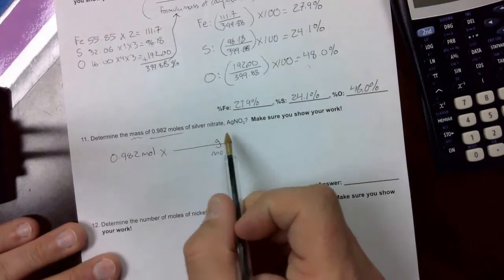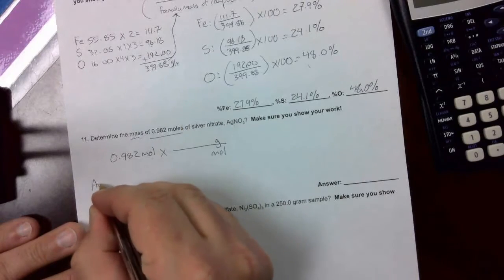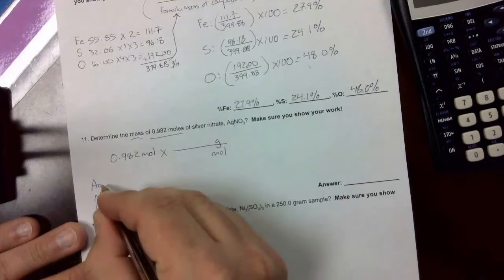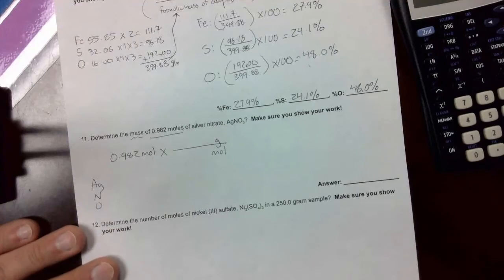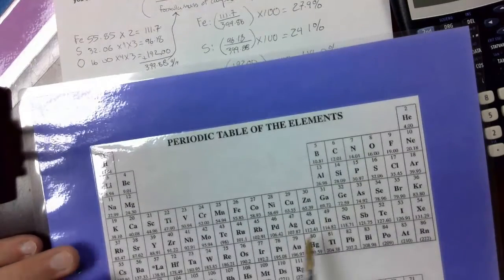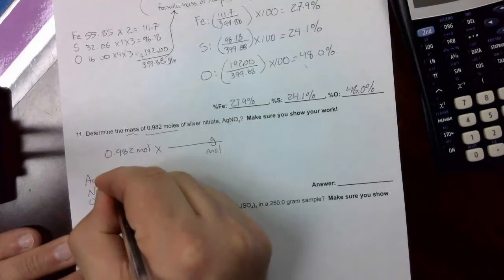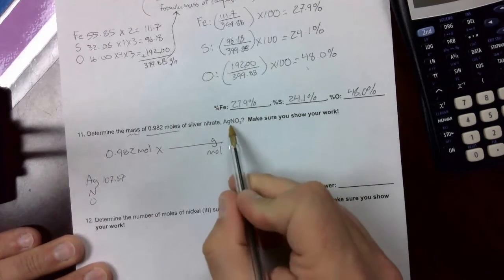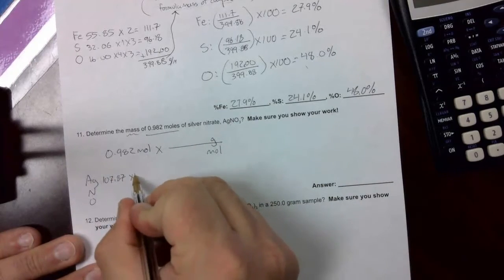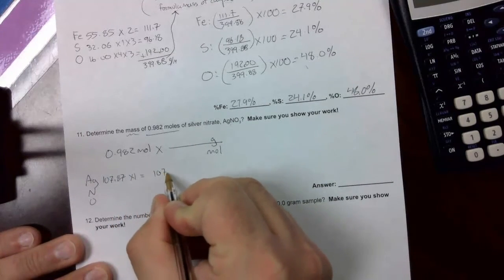So we need the formula mass of this whole compound. We've got Ag, we've got N, and we've got O. Silver, nitrogen, and oxygen. Silver is Ag. Right there. 107.87. Multiplied by the subscript, 1. That makes the math nice and straightforward.